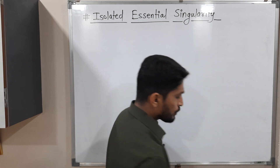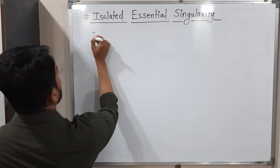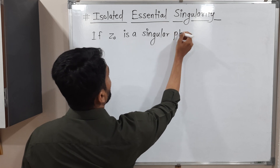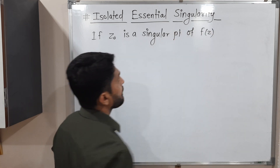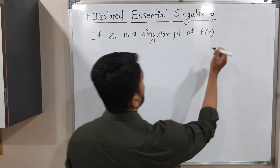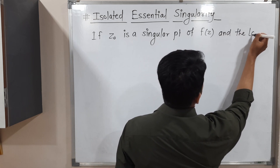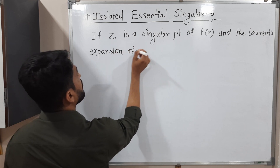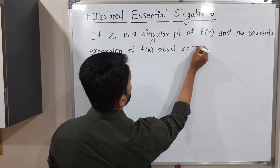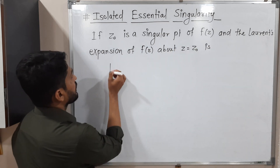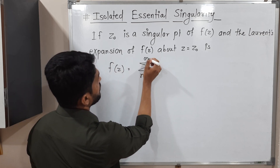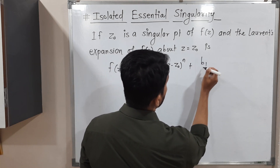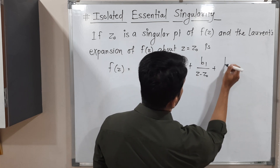Suppose z-naught is any singular point. If z-naught is a singular point of f(z), we are going to talk about its Laurent expansion. The Laurent expansion of f(z) about z equals z-naught is: f(z) equals summation with n running from 0 to infinity of a_n times (z minus z-naught) to the n — this is the analytic part of the Laurent series.